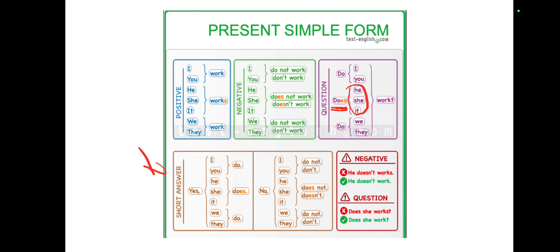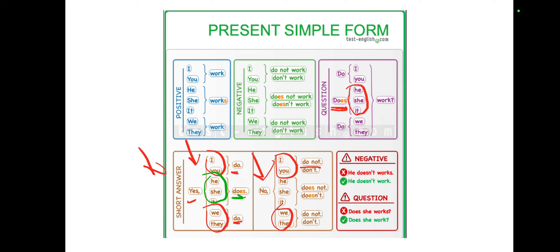Now let's look at short answers. For the positive form with I, you, we, or they, we say 'Yes, I do' or 'Yes, we do' — using 'do.' For he or she, which are singular, we use 'does' — 'Yes, she does.' The same goes for negative short answers: for I, you, we, they we say 'do not' or 'don't'; for he or she we say 'doesn't' or 'does not.'